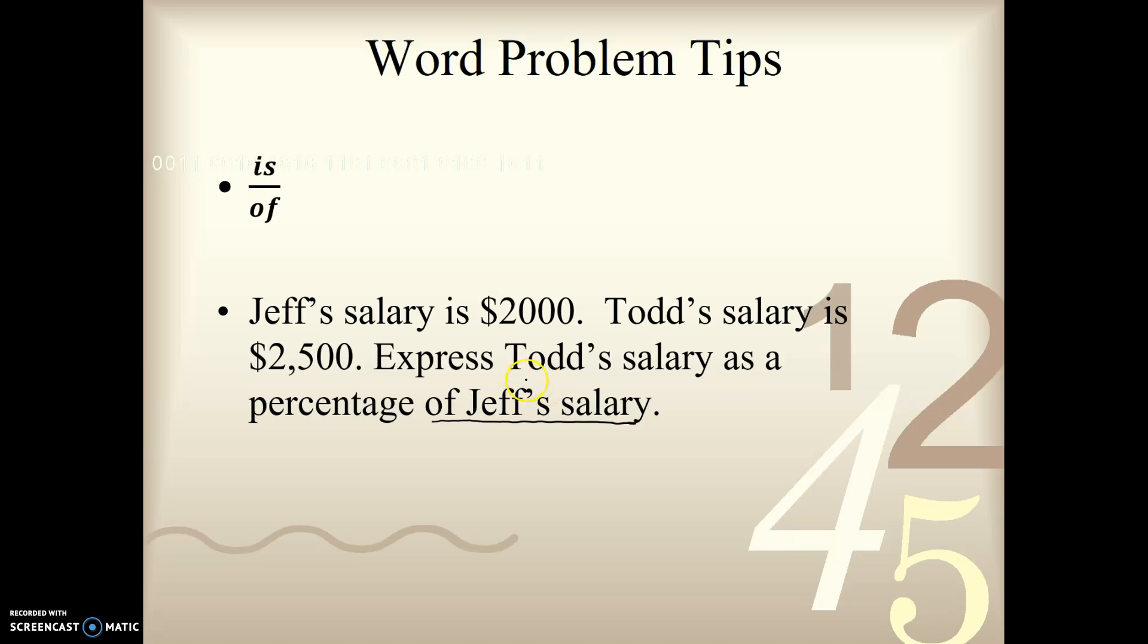We have Todd's salary as, and if you remember back from ratios, I said it's is or as over of. So let's set that up. We want Todd over Jeff. So we're going to put $2,500 on top, and $2,000 on the bottom.